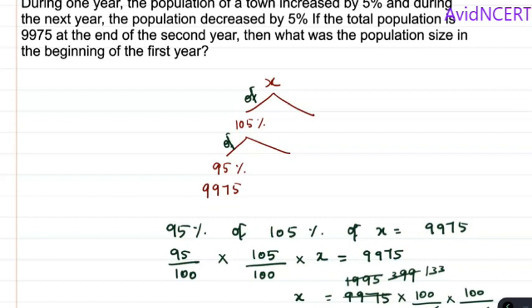So the population size in the beginning of the year is 10,000. Thanks for watching. If you have any doubts, please let me know in the comments.